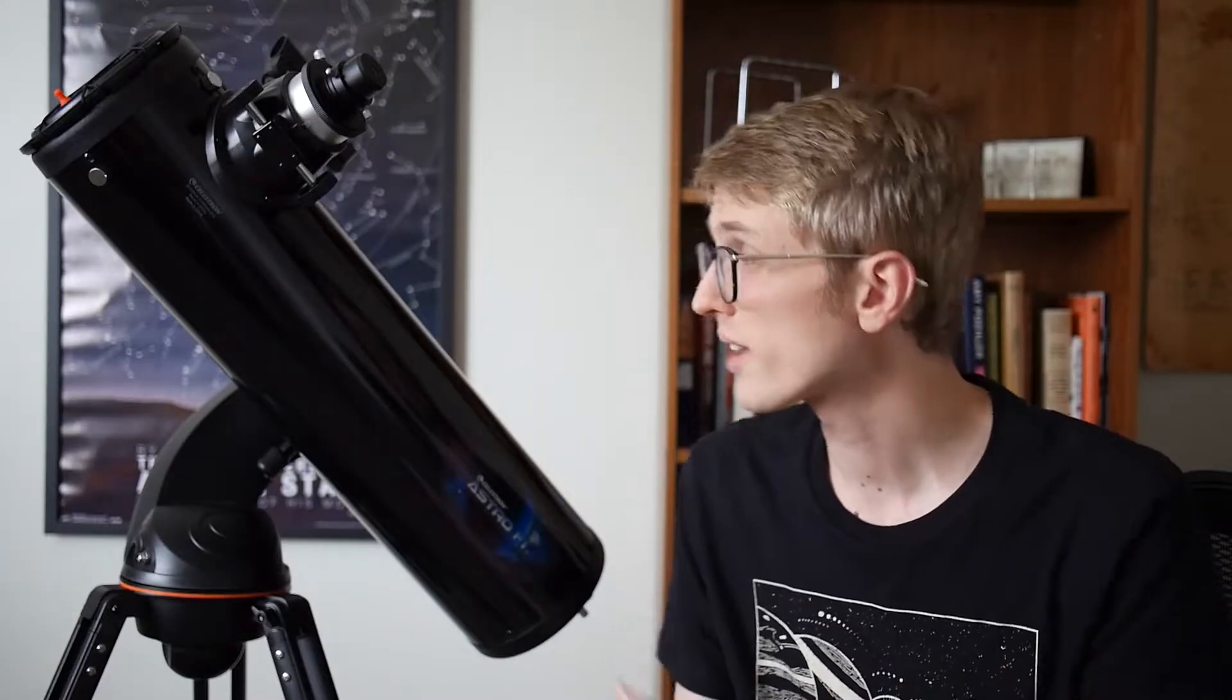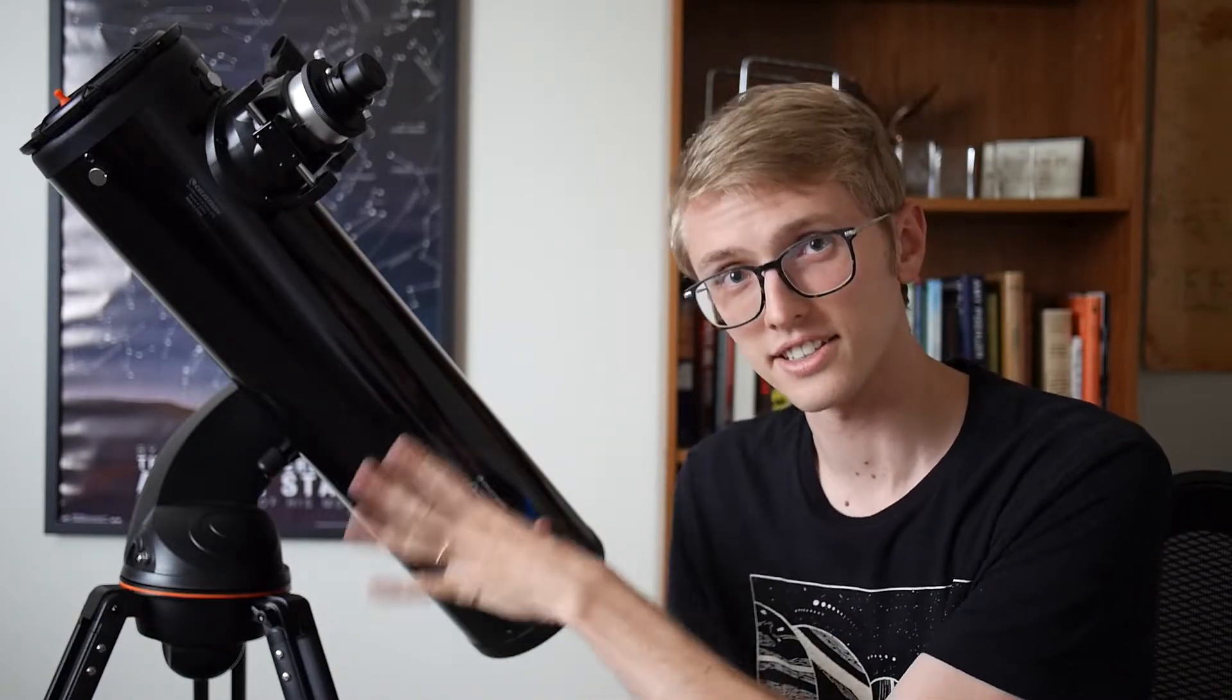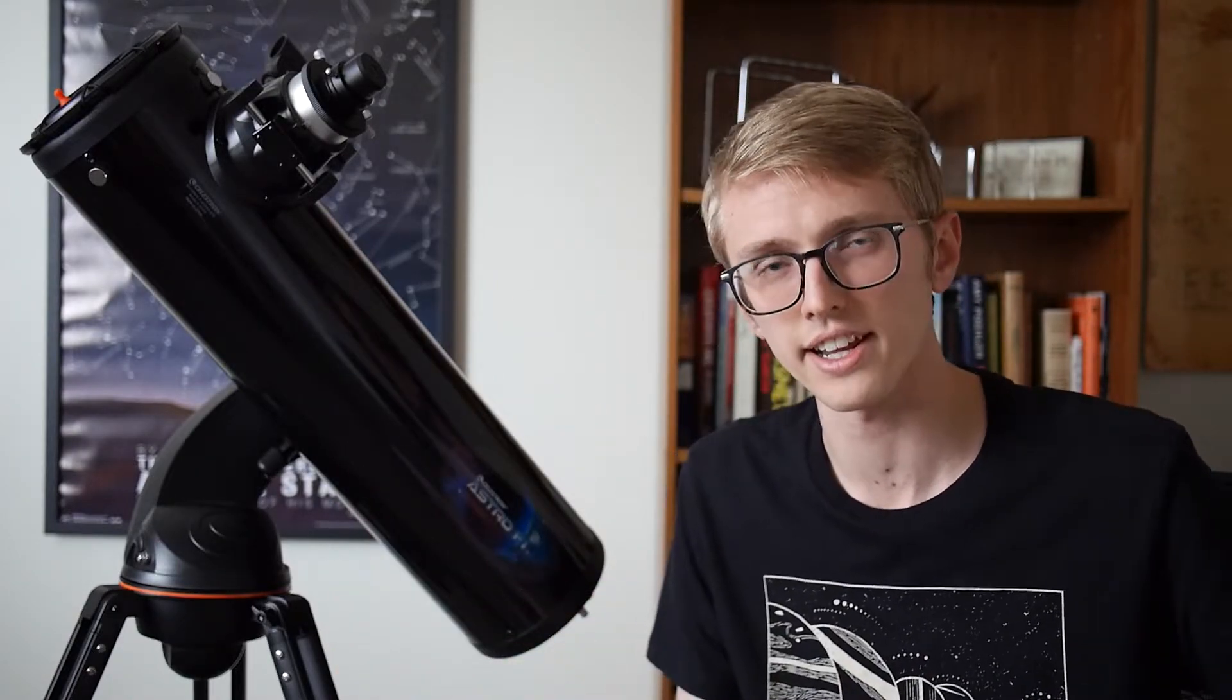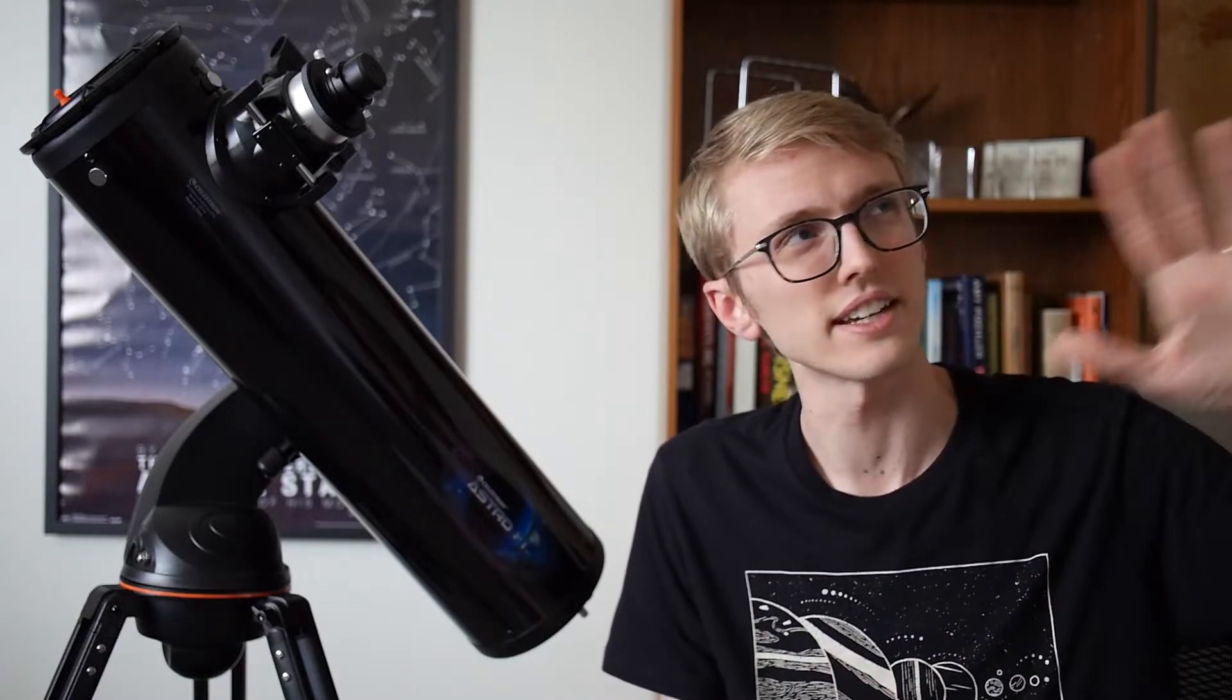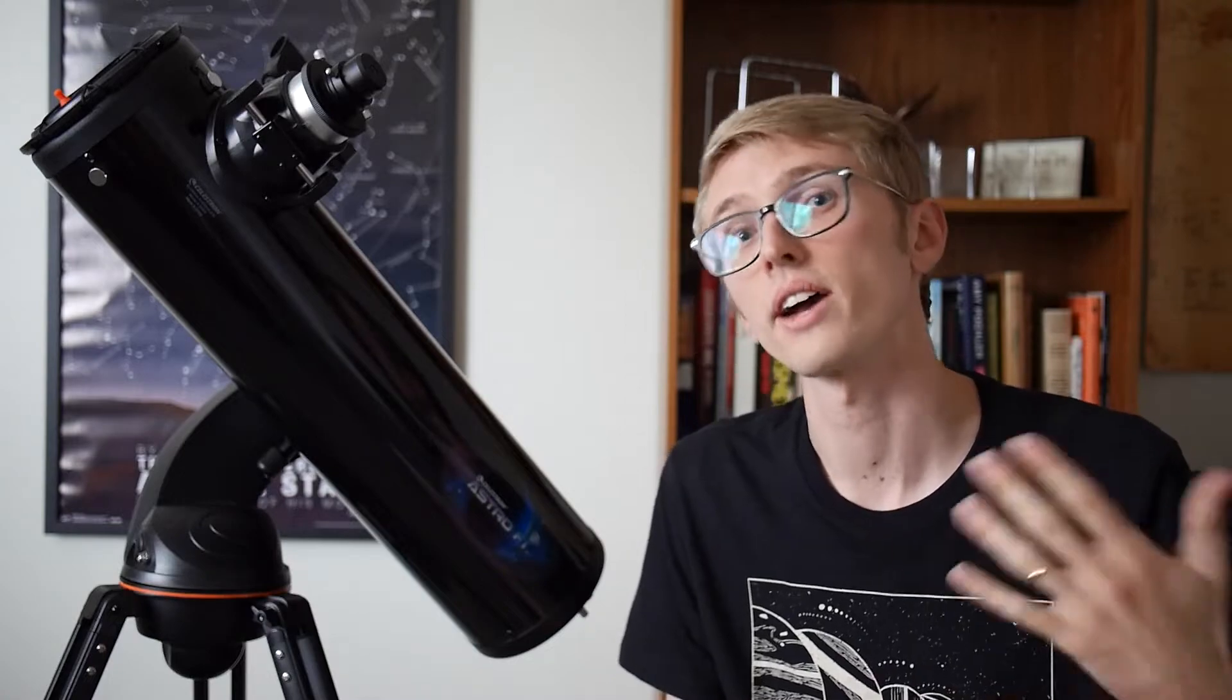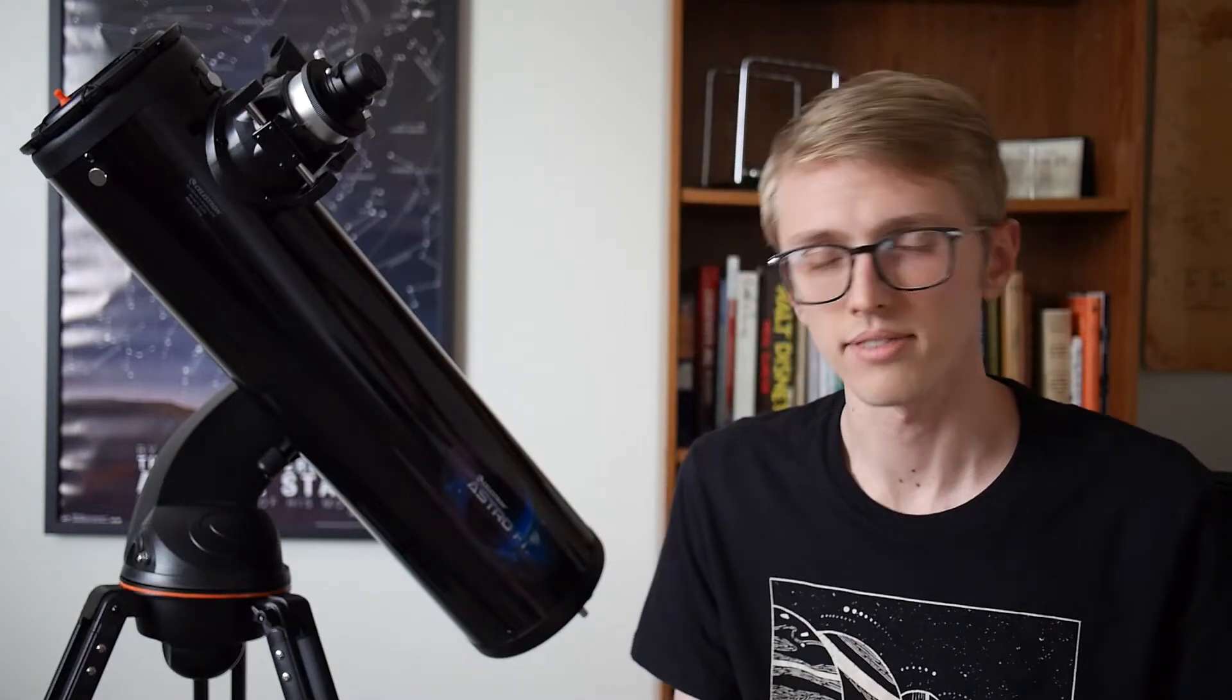That being said, you can't move your telescope after you align it to the stars because then it'll forget where it is. So make sure that you set up in a clear space where you can see everything you're going to want to see so that you don't have to move your telescope later. I have ran into that issue. A building was in the way of Cassiopeia. I wanted to look at it, but I didn't want to take the time to move it and then realign it, so I didn't do that.